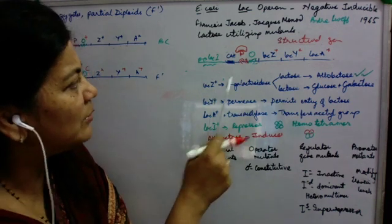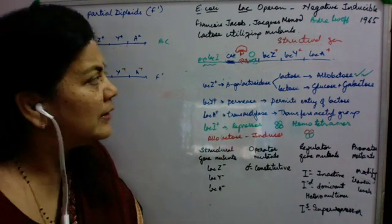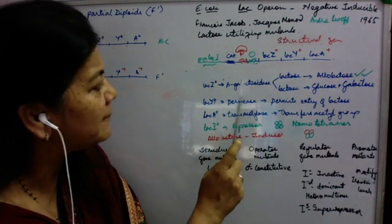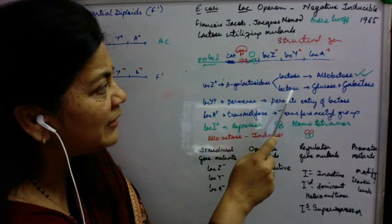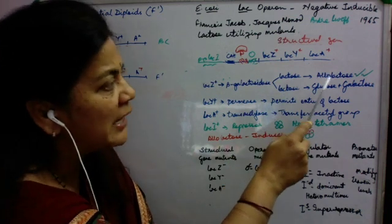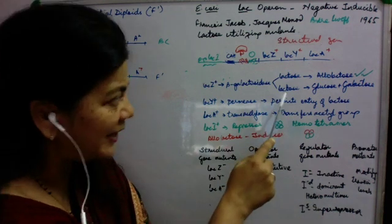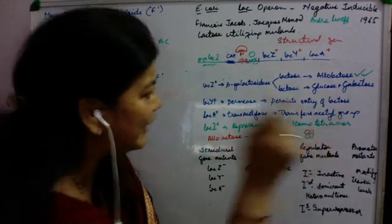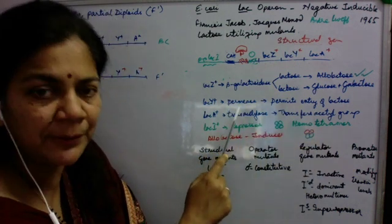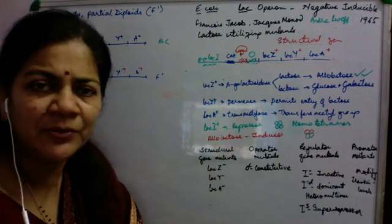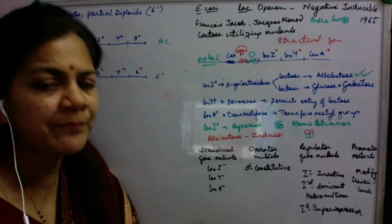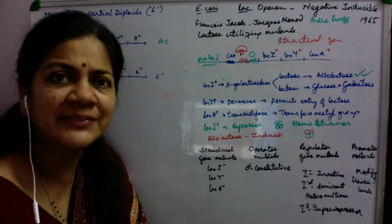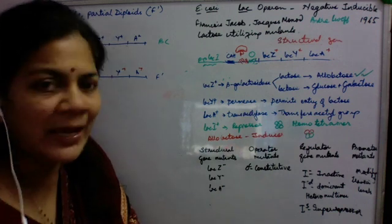Based on the different mutants they used, they established that LacZ+ codes for beta-galactosidase. Beta-galactosidase has two functions: it converts lactose into allolactose, which is an inducer, and it also metabolizes lactose into glucose and galactose. LacY+ codes for a permease, which is a transporter protein that allows the entry of lactose from the medium into the cell. LacA+ codes for a transacetylase, which is known to transfer the acetyl group.